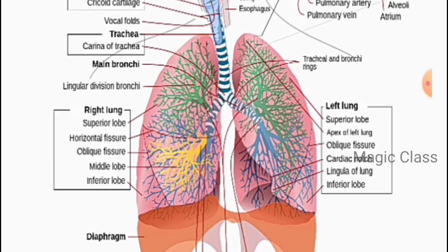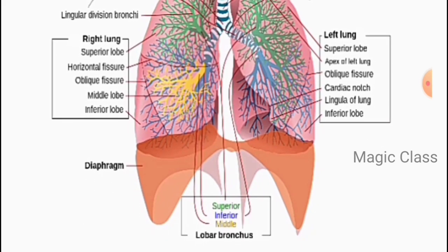The lungs are the organs present in the chest cavity that allow the body to exchange gases — you take in oxygen and give out carbon dioxide. The lungs are two spongy, elastic bags, one on each side of the thoracic cavity. The thoracic cavity is bound dorsally by the vertebral column, ventrally by the sternum, laterally by the ribs, and on the lower side by the dome-shaped diaphragm.